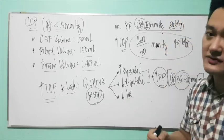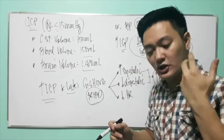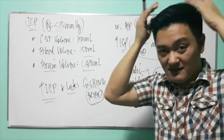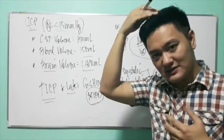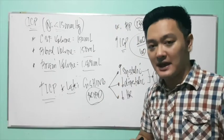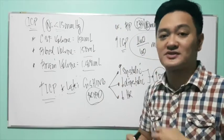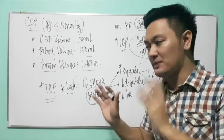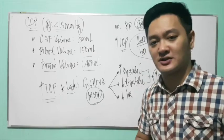For pediatric patients, aside from neurologic deterioration, a child with increased ICP — because of the very soft fontanels — will show bulging fontanels, an increase in head circumference, projectile vomiting, a poor sucking reflex, and a high-pitched cry. Those are the presentations of a pediatric patient with increased intracranial pressure.